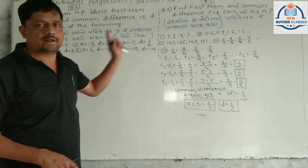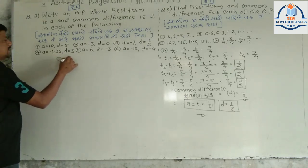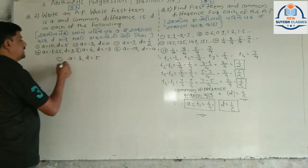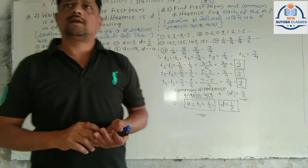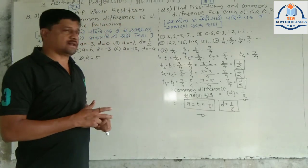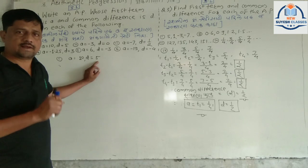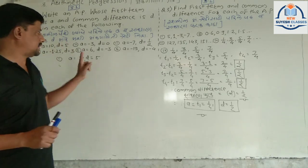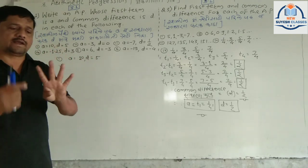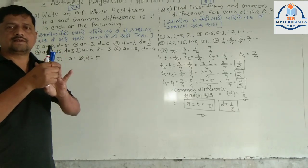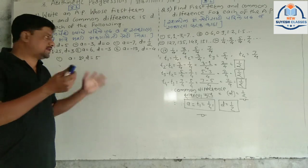This is the minimum of 4 sankhya. Let's take a look at this example. First example: a is equal to 10, d is equal to 5. If we think about 3 sankhya, the sequence is 10, 15, 20, 25. This is the first sankhya, the second sankhya is equal to 5, and the first sankhya is equal to 4 sankhya.